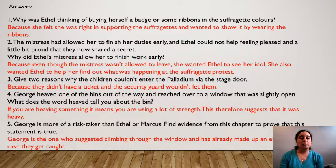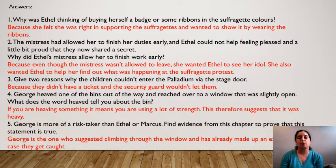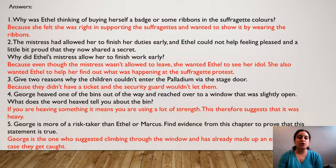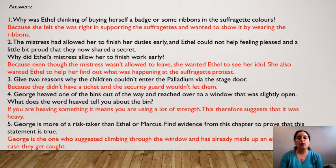Number four: George heaved one of the bins out of the way and reached over to a window that was slightly open. What does the word heaved tell you about the bin? When you heave something, you're using a lot of strength in order to move it, which therefore suggests that it was heavy and it made him use a lot of energy to push it. Question five: George is more of a risk taker than Ethel or Marcus — find evidence from the chapter to prove that this statement is true. George is the one who suggested climbing through the window to go and see Violet Vane, and he's already made up an excuse: he said to them, if someone catches us, we'll just say we got lost.